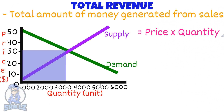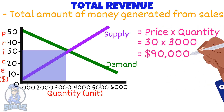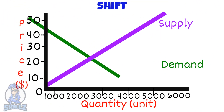The equation is: TR equals P times Q. Let's do an example. In this graph, the total revenue would be at price 30 and quantity 3,000. If we multiply them, the total revenue would be 90,000. What would happen if the demand curve shifted? As you might guess, the equilibrium price would shift based on the movement of the demand curve.